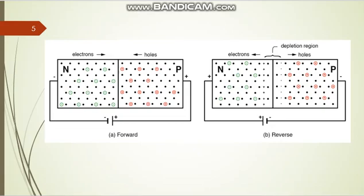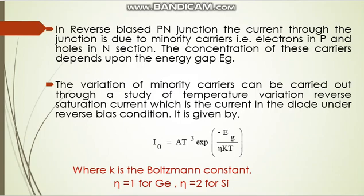These minority carriers are more effective with respect to temperature — if you raise the temperature, their concentration increases. By connecting the diode in reverse bias, we can find the energy gap of the semiconductor, because minority carrier concentration depends on temperature. As temperature rises, conductivity increases. The current through the diode is given by the formula: I₀ = A·T³·exp(−Eg / η·k·T).